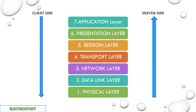Here is the OSI model. There are seven layers in the OSI model: the first layer is the physical layer, the second is the data link layer, the third is the network layer, the fourth is the transport layer, the fifth is the session layer, the sixth is the presentation layer, and finally the seventh layer is the application layer.